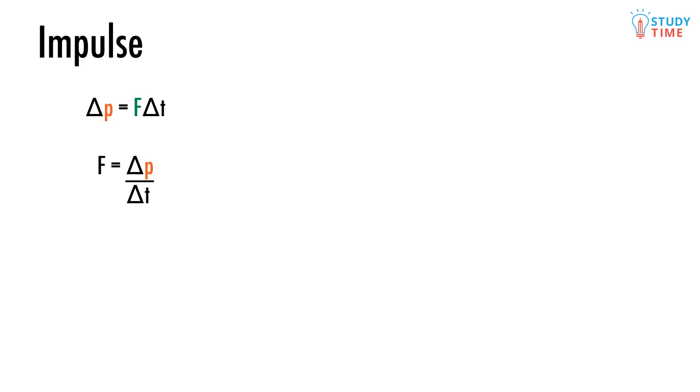So the faster you are able to stop the truck, the more force you would have to push on the truck with. We can arrange the equation for impulse in terms of force: F equals delta p over delta t.